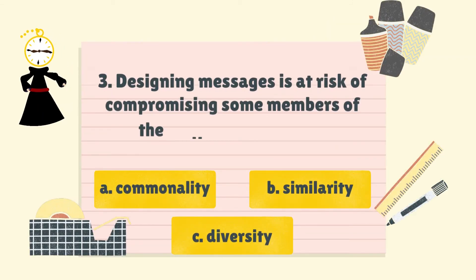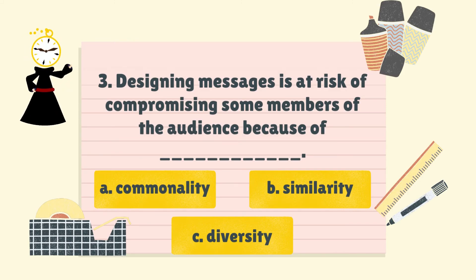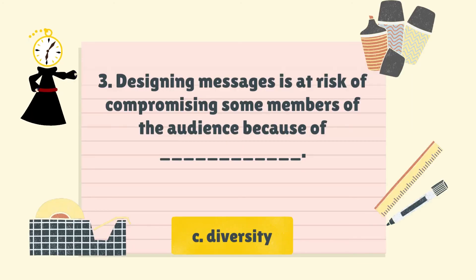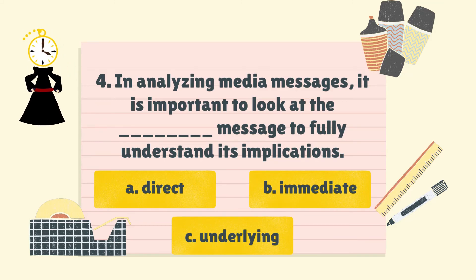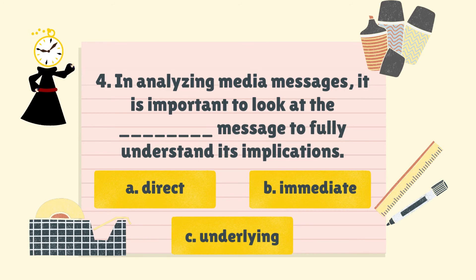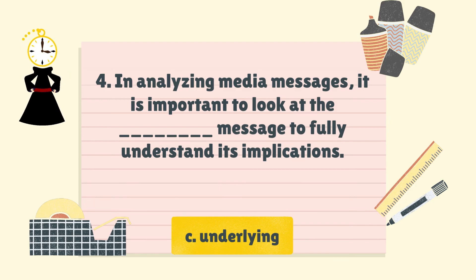Number three: designing messages is at risk of compromising some members of the audience because of A. Commonality. B. Similarity. C. Diversity. Answer: C. Diversity. Number four: in analyzing media messages, it is important to look at the blank message to fully understand its implications. A. Direct. B. Immediate. C. Underlying. Answer is C. Underlying.